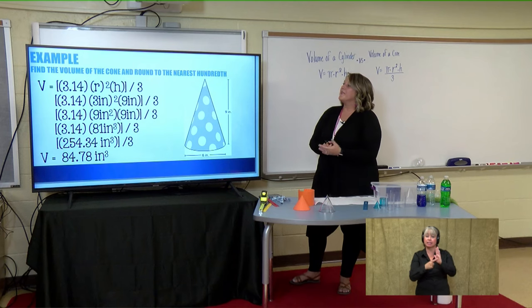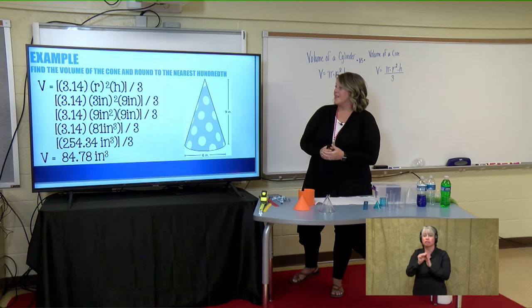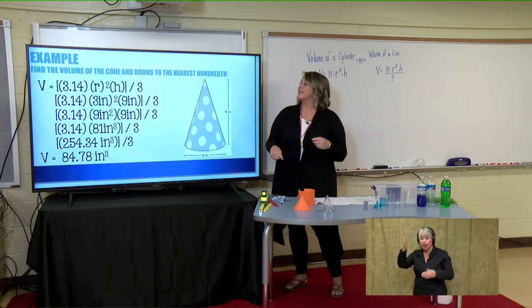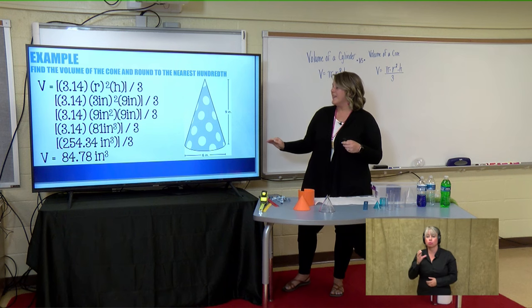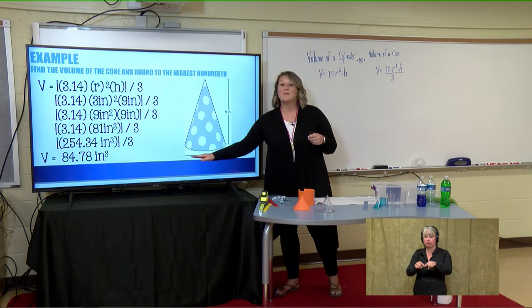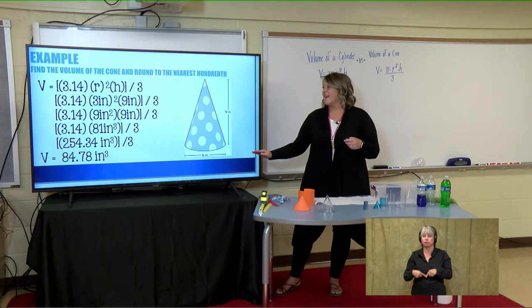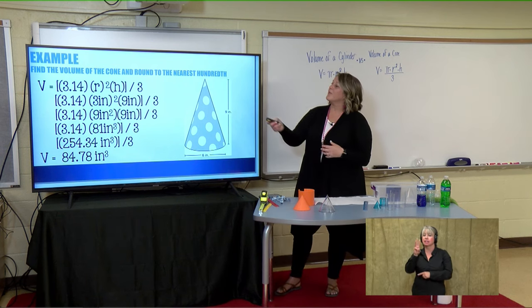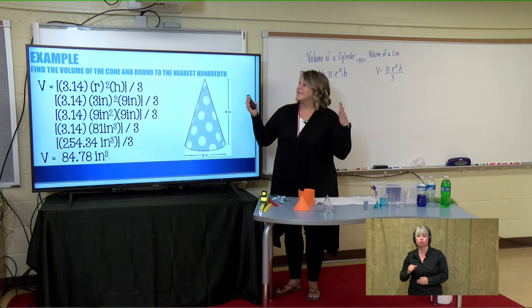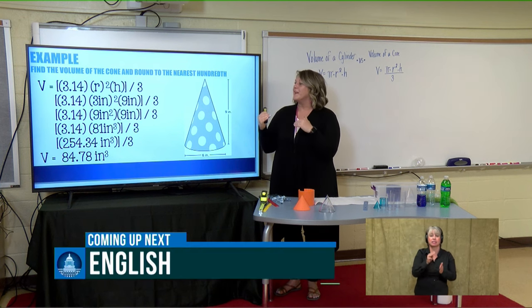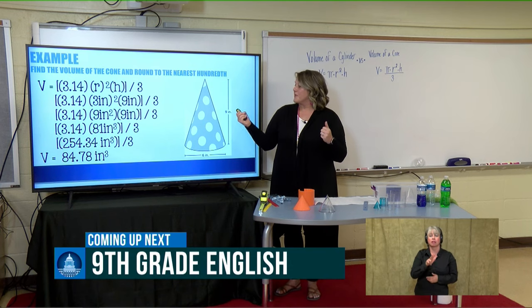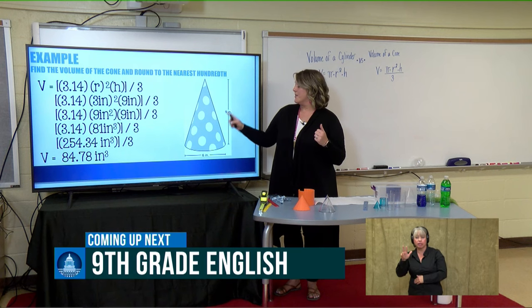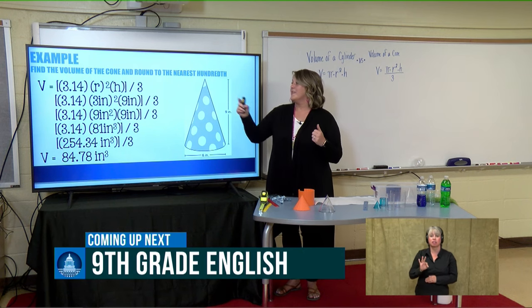Let's find the volume of a cone and round to the nearest hundredth. This looks like a party hat — the kind with the elastic band. What do you notice? A lot of times, problems give us the diameter rather than the radius. The diameter here is six, so the radius is half of six, which gives us three. In our numerator, we have the same as our cylinder: 3.14 times our radius of three, times our height of nine — then divide by three.